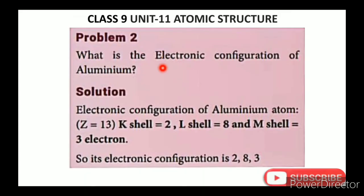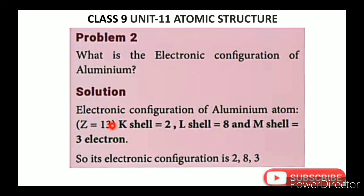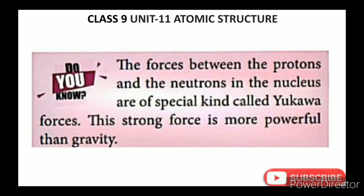Problem 2: What is the electronic configuration of aluminium? Aluminium has atomic number 13. K shell gets 2 electrons; balance is 11. L shell gets 8 electrons; balance is 3. The remaining 3 go to M shell. So the electronic configuration of aluminium is 2, 8, 3.